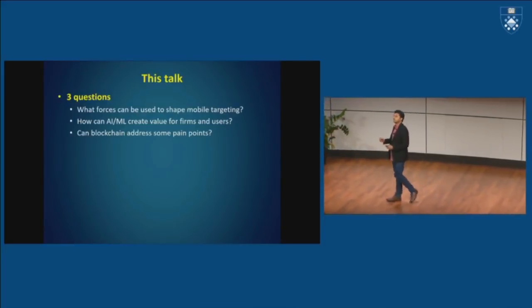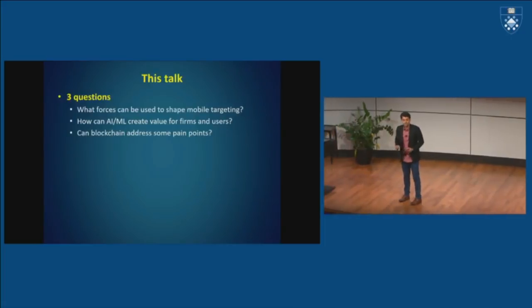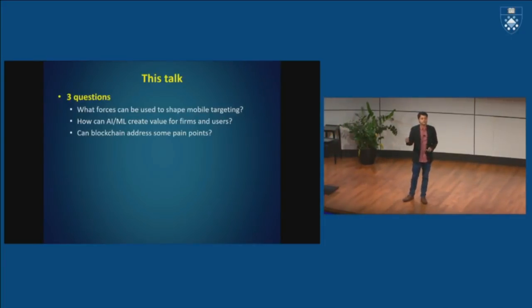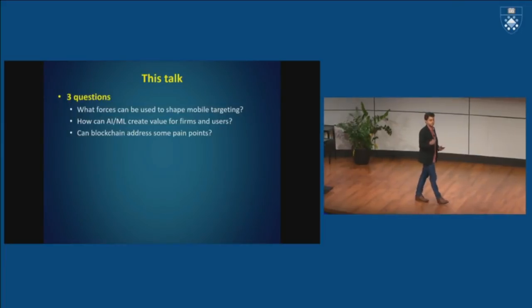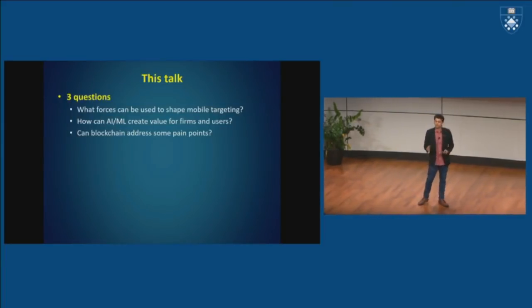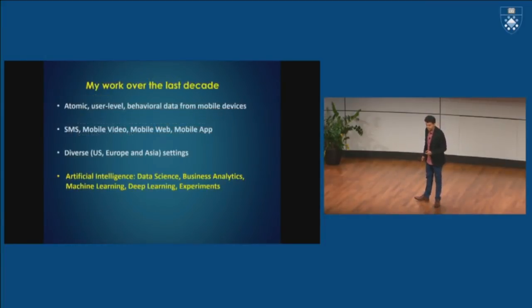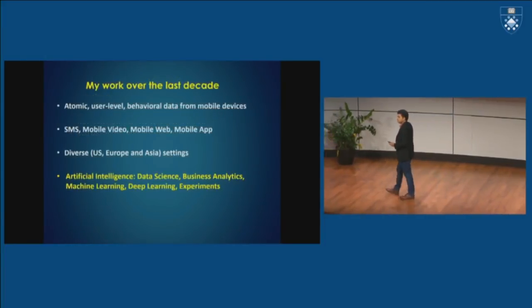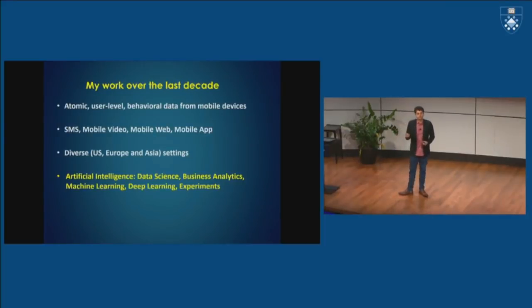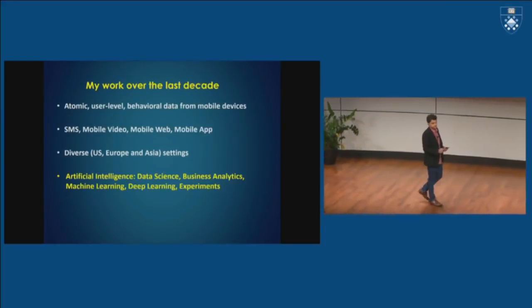All right, so let's start with what is fundamentally different about mobile as a device? It's portable, and it's personal, right? It's always with you, and it typically only belongs to you. You may share your laptop, your desktop, but you're not going to share your smartphone with even somebody in your family. So what that does, it generates very atomic user level and very fine-grained behavioral data about the consumer.